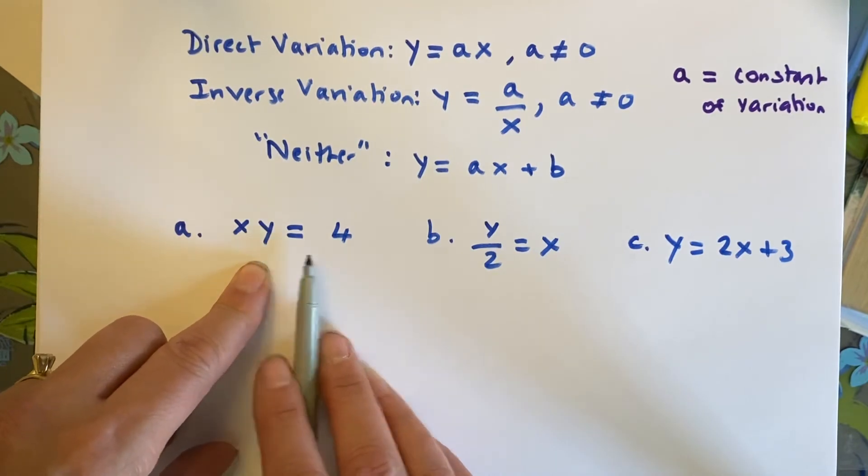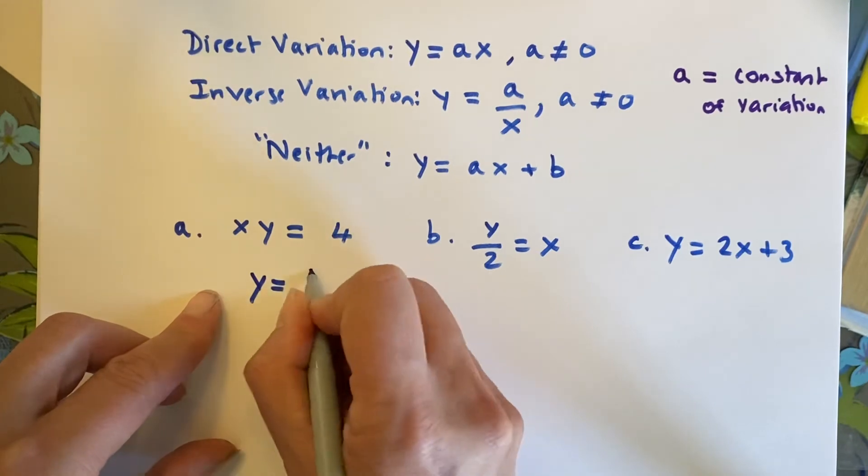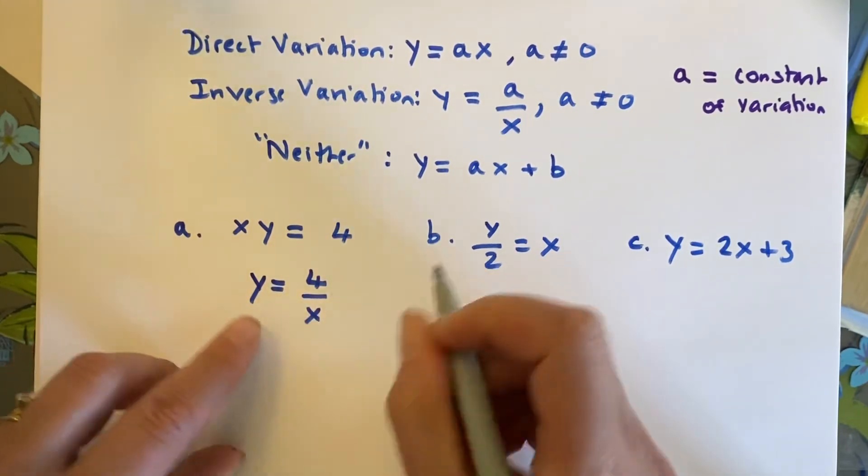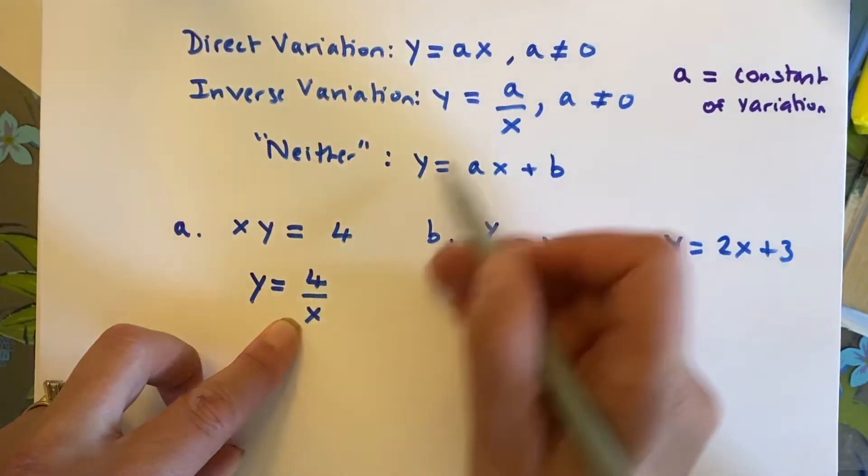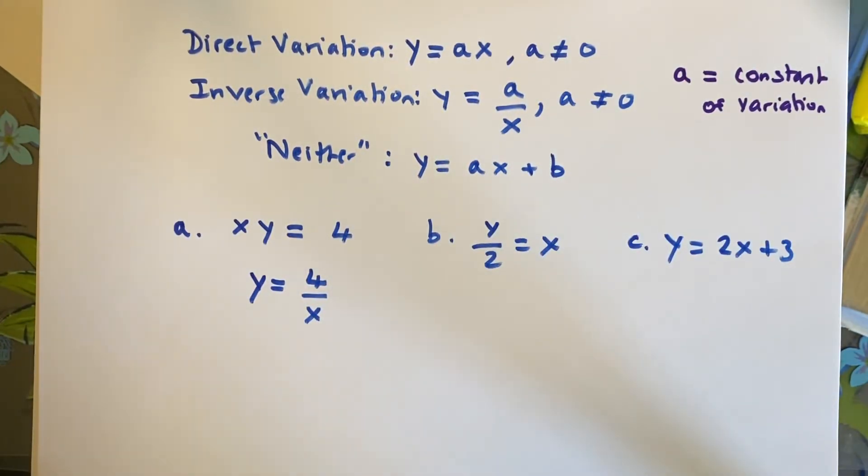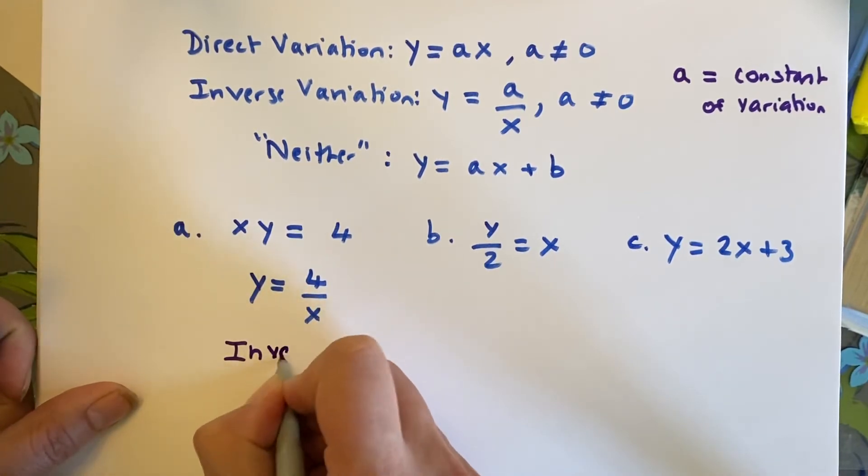So, to do that, to put this in a y equal form, I have to divide both sides by x. And when I do that, I get 4 divided by x. Well, this, you can see, is inverse variation. So, my answer for this is going to be inverse variation.